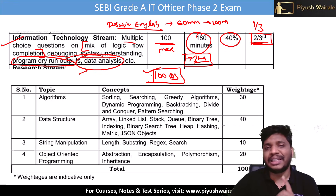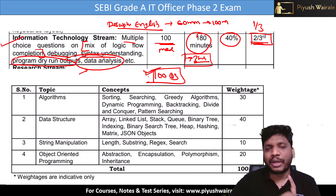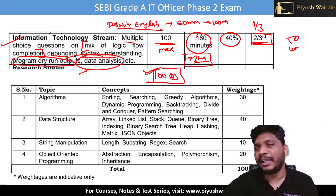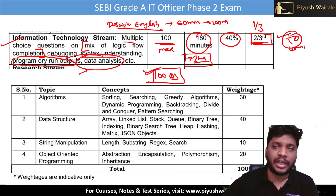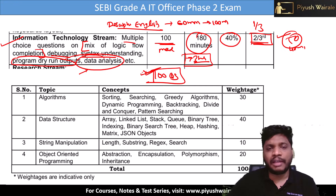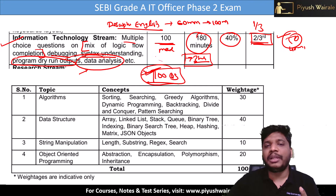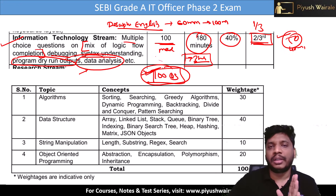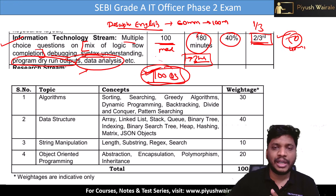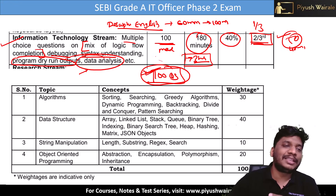They have not specifically mentioned the pattern — how many questions there will be or what the marking scheme will be. But you can expect 100 questions for 100 marks for three hours. Two weeks before the exam they will provide details about the exam pattern. The number of questions and marking scheme will be provided just 15 days before. So for now, we have to focus on the syllabus.